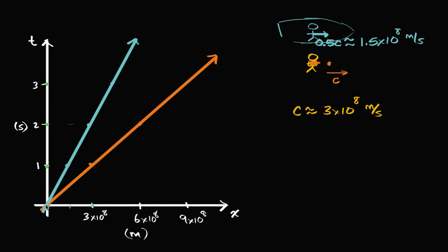We added a scenario where right at time zero, a friend passes me in her spaceship, traveling relative to me in the positive x direction at half the speed of light. We plotted her path: at time zero her spaceship is at the origin, then after one second she would have traveled 1.5×10⁸ meters, and after two seconds she would have traveled 3×10⁸ meters. This blue line in the last video was her path.